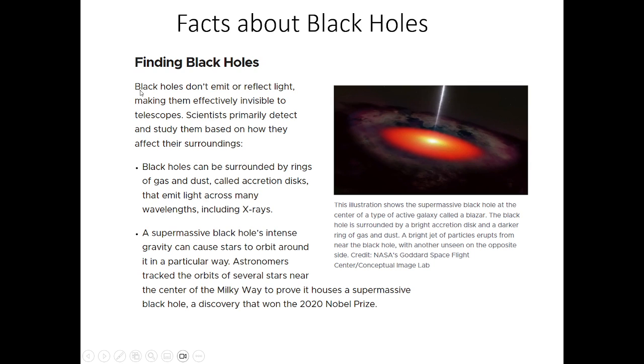Now, finding black holes. Black holes don't emit or reflect light, making them effectively invisible to telescopes. Scientists primarily detect and study them based on how they affect their surroundings. Black holes can be surrounded by rings of gas and dust, called accretion disks, that emit light across many wavelengths, including x-rays.